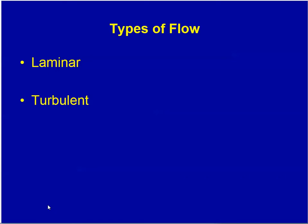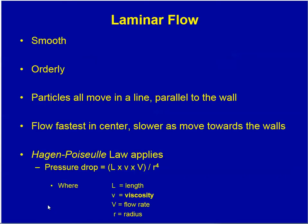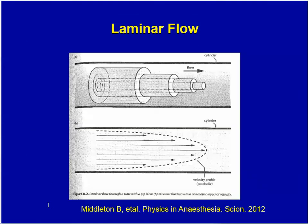Flows are categorized as laminar or turbulent. Laminar flow is smooth and orderly. The particles all move in a line with the fastest flow in the center and the slowest flow along the walls. Most importantly, the Hagen-Poiseuille law applies to the pressure drop, which is governed by the length, viscosity, flow rate, and inversely to the radius to the fourth power. This is a schematic showing the type of flow in a tube, which is laminar.